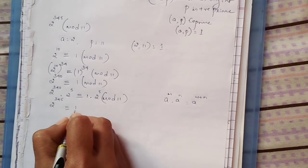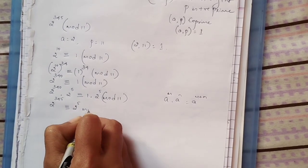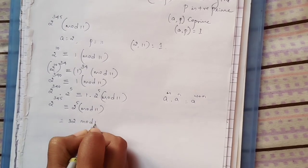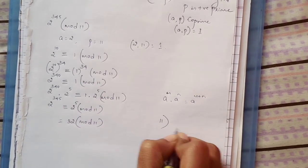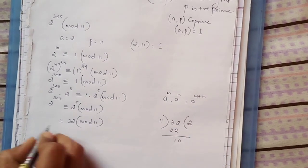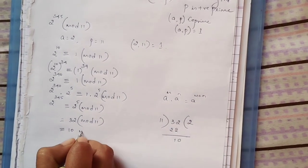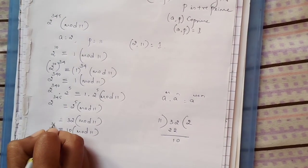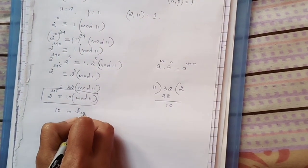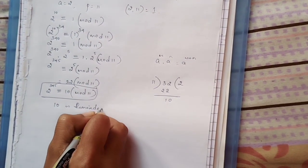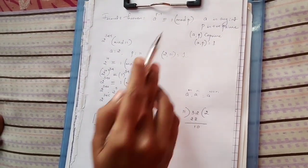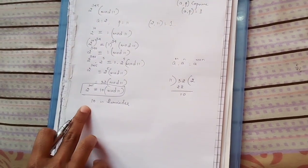This becomes 2 to the power 345 congruent to 1 times 2 to the power 5 mod 11. 2 to the power 5 is 32 mod 11. When 32 is divided by 11, 11 times 2 is 22, so we get 10. This is 10 mod 11. Therefore, 2 to the power 345 is congruent to 10 mod 11. 10 is the remainder. We have to be careful to apply this: a and p should be coprimes.